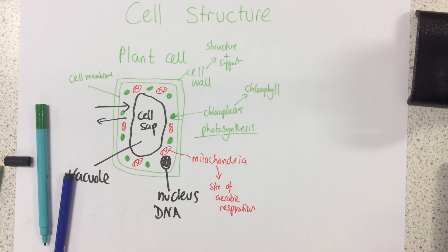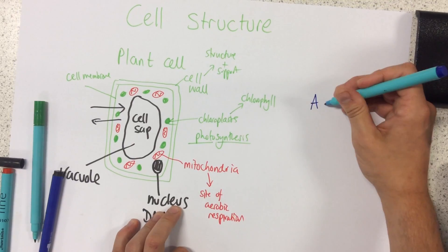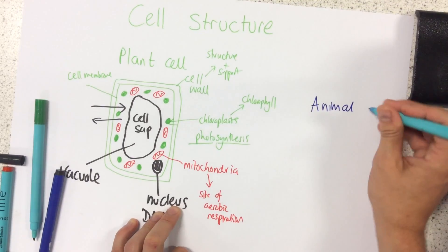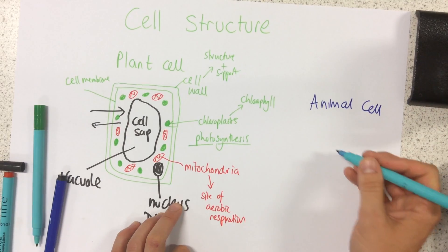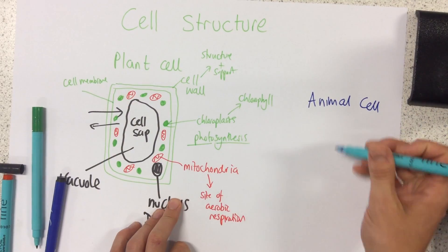So that there is a plant cell. Now how does an animal cell compare? I'm going to draw it just here. So here is our animal cell. Now the animal cell actually has fewer features than the plant cell.